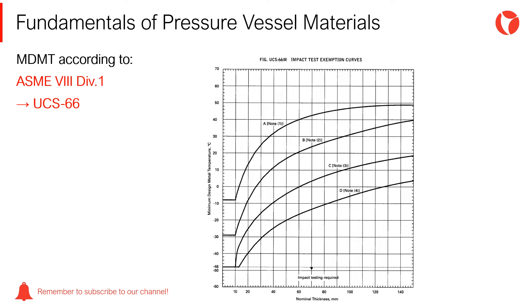The MDMT is determined as per the indications in section UCS-66 of the ASME code. This section presents characteristic curves for each material, where the curves indicate the minimum metal design temperature (MDMT) depending on the material and the thickness of the component. These curves have been obtained through tests and equipment operating satisfactorily.